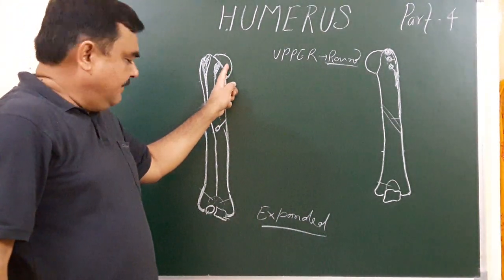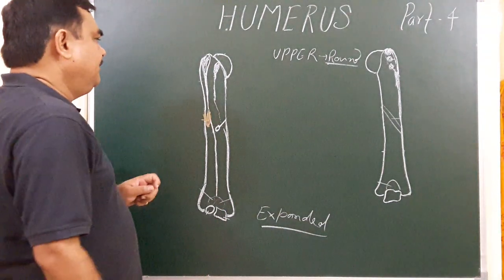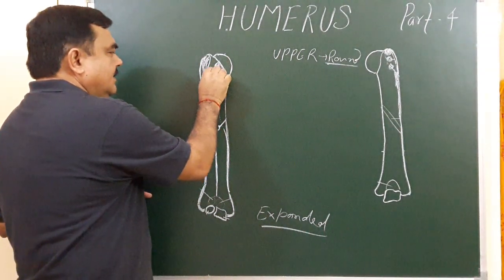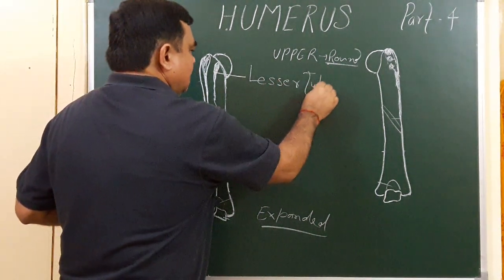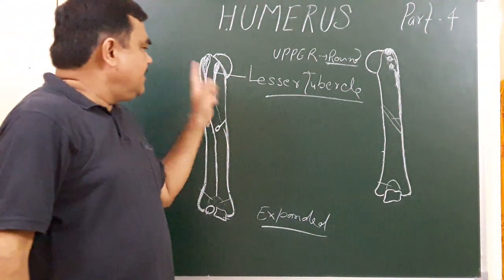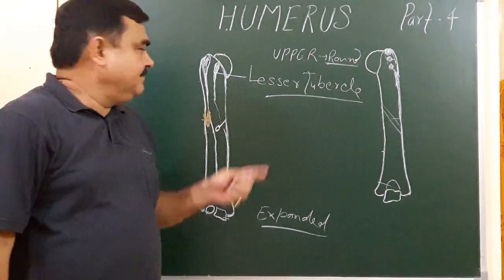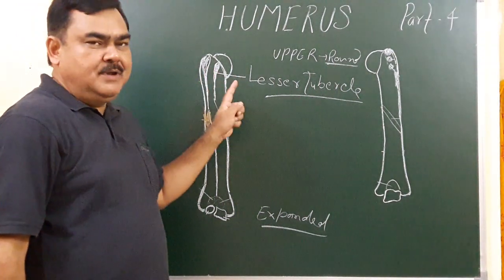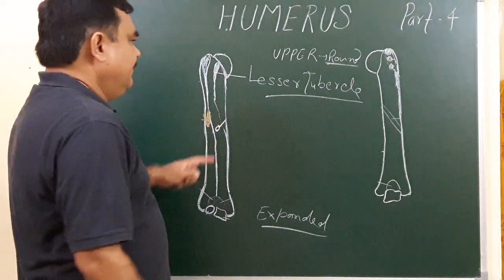Another important thing: this is the lesser tubercle. The lesser tubercle lies on the anterior aspect. So keep in mind the lesser tubercle should be on the anterior aspect.